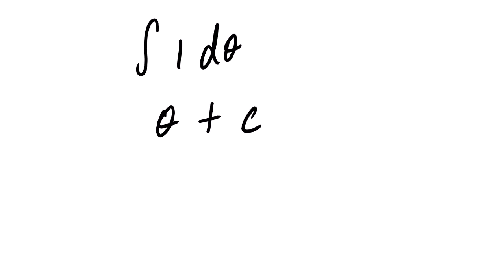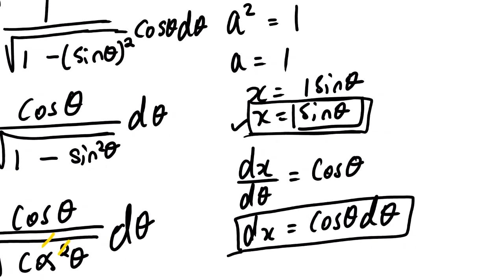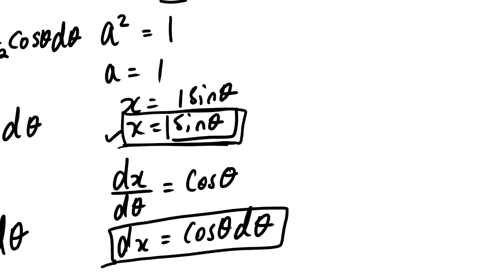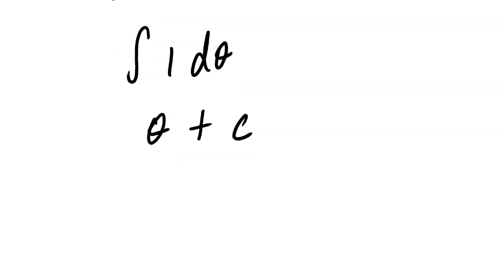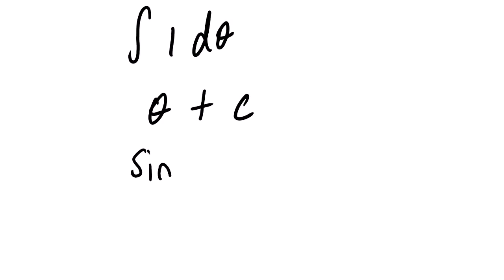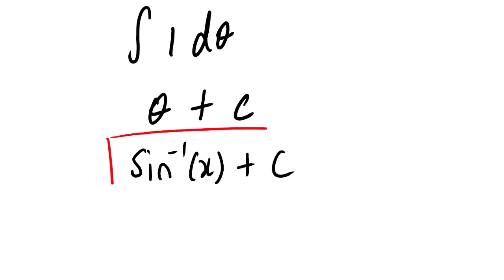Now we need to substitute back to the original form. Looking at our substitution, x equals sin theta, so solving for theta gives theta equals sin inverse of x. Therefore, when we see theta in our answer, we replace it with sin inverse of x, giving a final answer of sin inverse of x plus c.